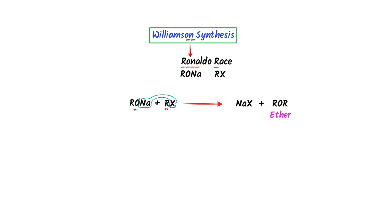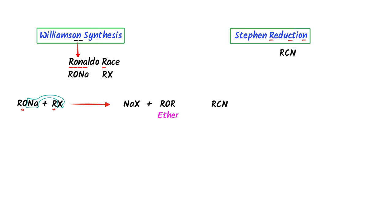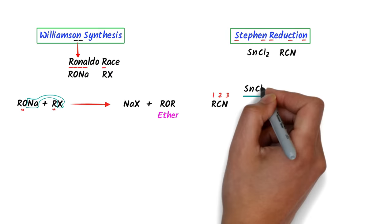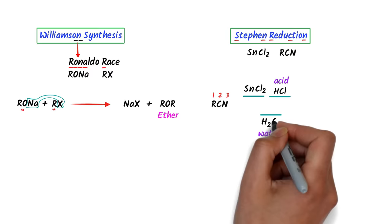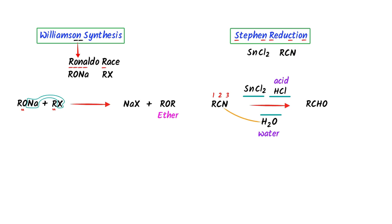Now let me teach you the Stephen reduction reaction. I select R, C, and N in 'reduction' — this stands for alkyl cyanide. These are three letters (1, 2, 3), so I write three dashes. I select S and N in 'Stephen' — it stands for SnCl2 (tin chloride). One dash is for acid like HCl and another for water. I replace the nitrogen by OH of water to get R-CHO — this is an aldehyde. This is the Stephen reduction reaction.